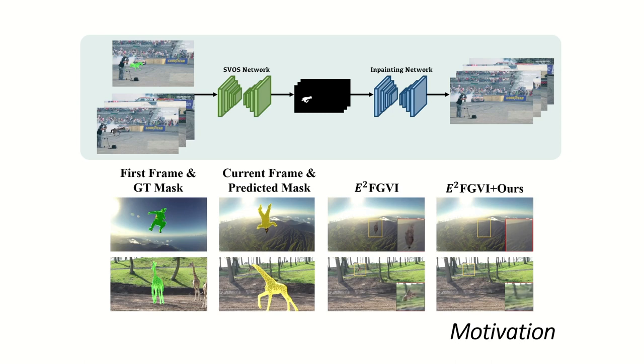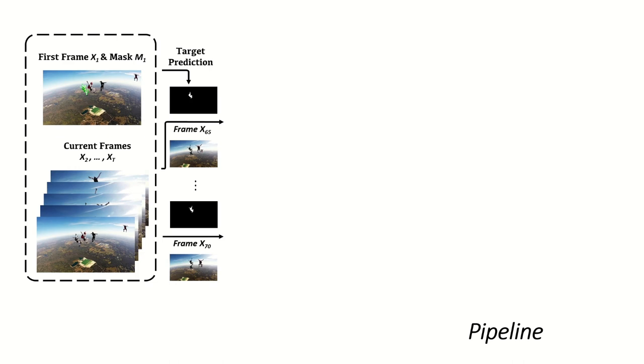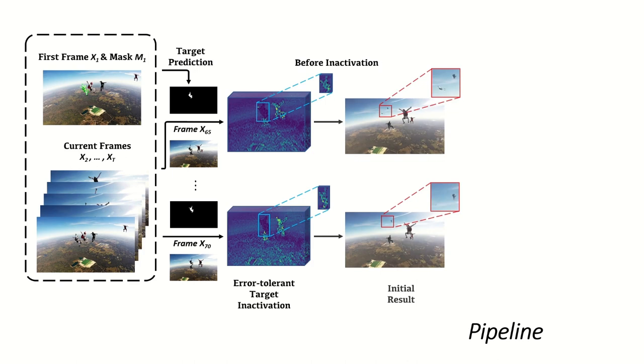To handle the lack of annotations in remaining frames, we propose a novel curricular inactivation mechanism to substitute the traditional hard masking operation, allowing the model to fully exploit the meaningful target information to assist error-tolerant inpainting.